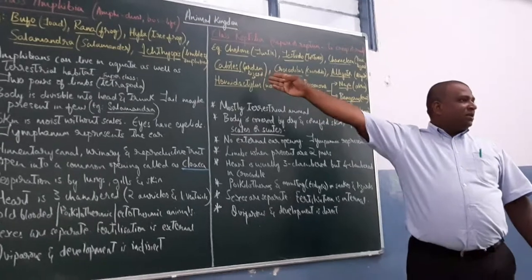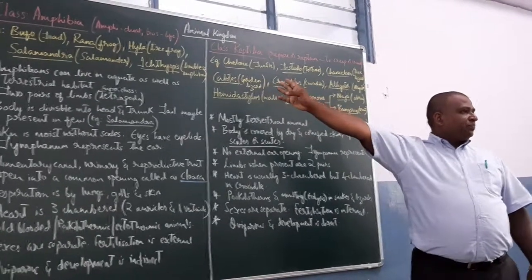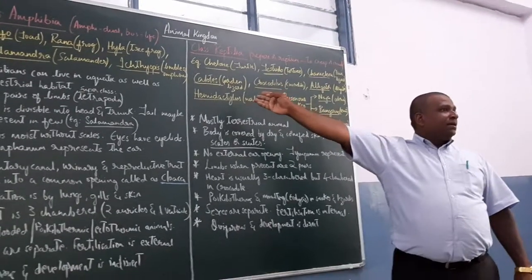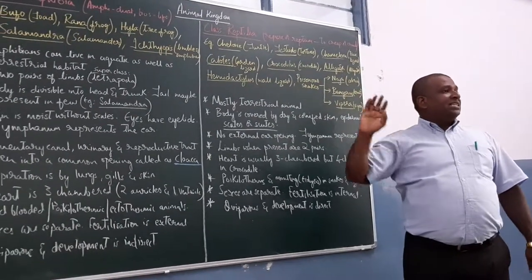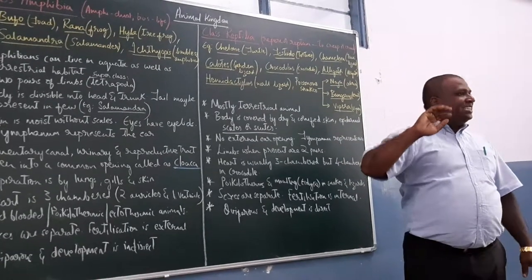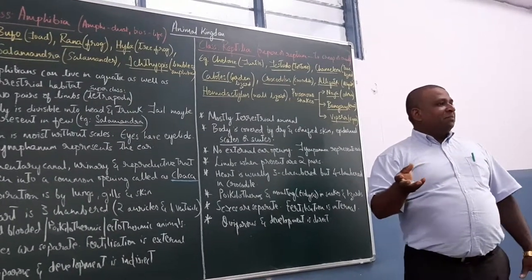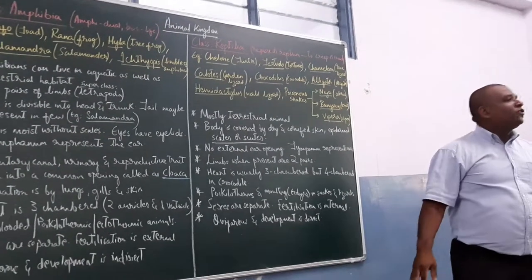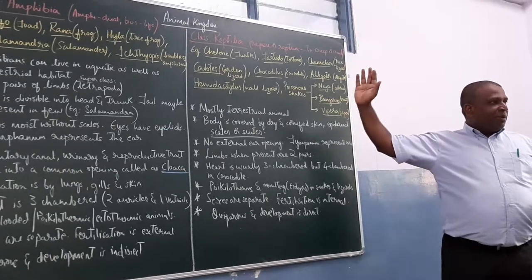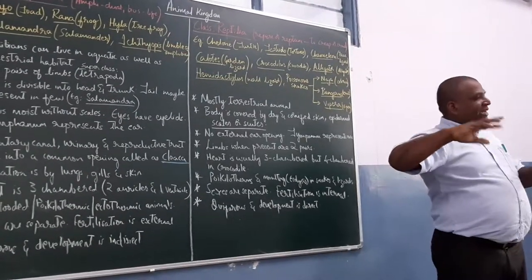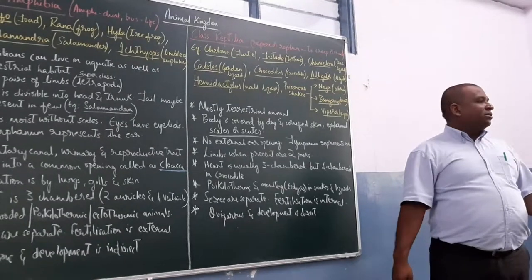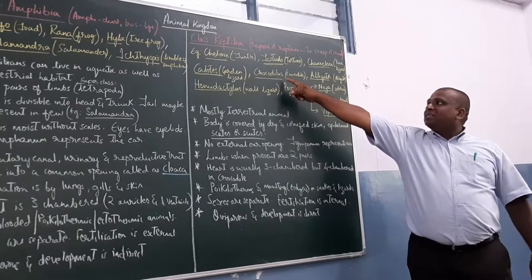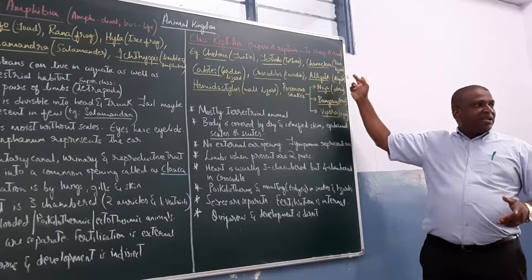Calotes is garden lizard. Then chameleon, what is chameleon, it changes its colors. It changes colors and it shows camouflage. The chameleon, it shows camouflage, it changes its colors according to the conditions. That you can see, crocodiles, crocodile. Alligator is alligator itself.